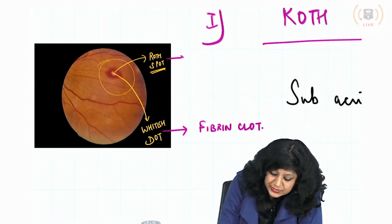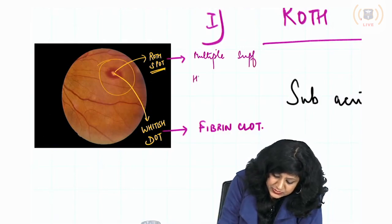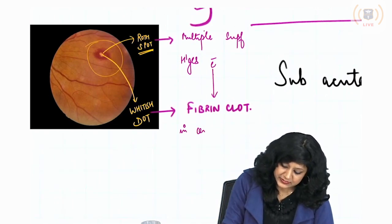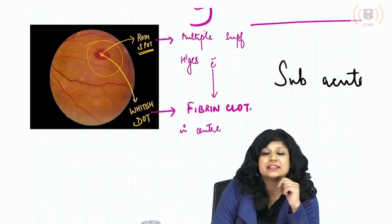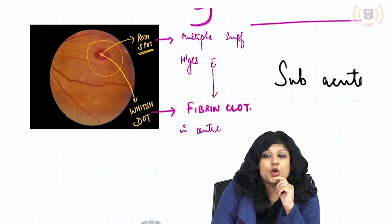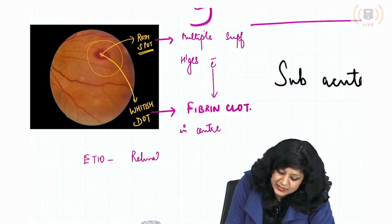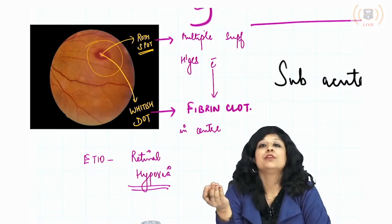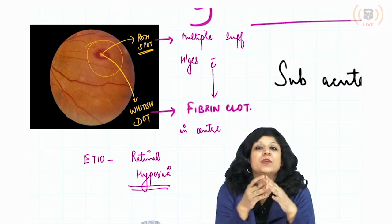Roth spots represent multiple superficial hemorrhages with a fibrin clot or whitish dot in the center. This is called a Roth spot. The Roth spot is found in subacute bacterial endocarditis due to retinal hypoxia. Whenever a patient of bacterial endocarditis is admitted in the medicine ward, they will always request a fundus view to check if retinal hypoxia is taking place and whether Roth spots are present.